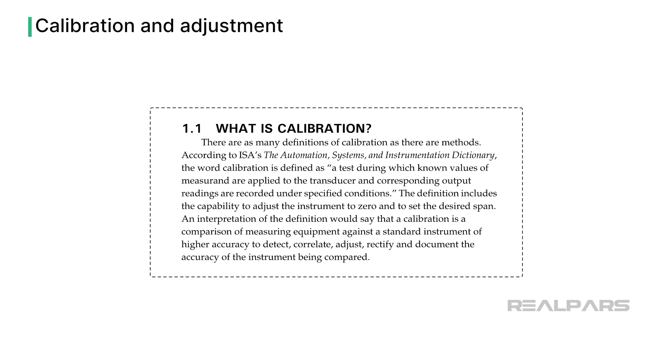Calibration, as defined by the ISA Instrument Calibration Series, involves determining the relationship between the measured quantity and the device's output. This relationship is established by referencing a recognized standard of measurement.